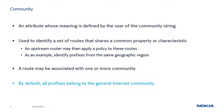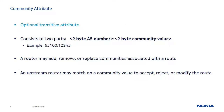By default, all routes are members of the Internet Community and this requires no configuration. All other communities are explicitly configured. The Community Attribute is an optional, transitive attribute that a BGP router uses to communicate additional information about the routes it advertises to its peers. Optional transitive means that the attribute may not be recognized by all BGP routers, but it must still be preserved and advertised to peers.